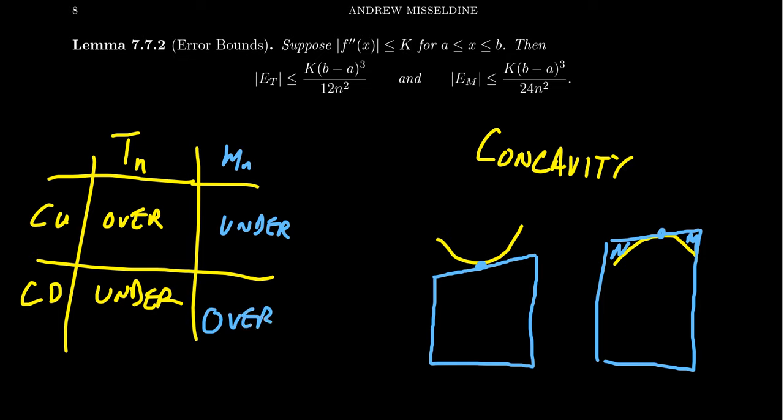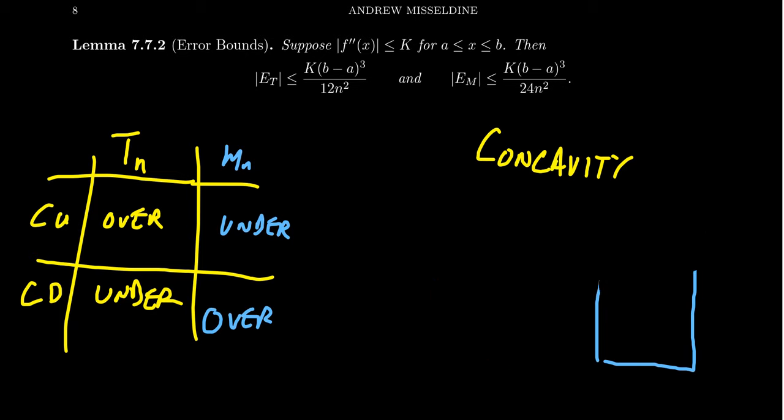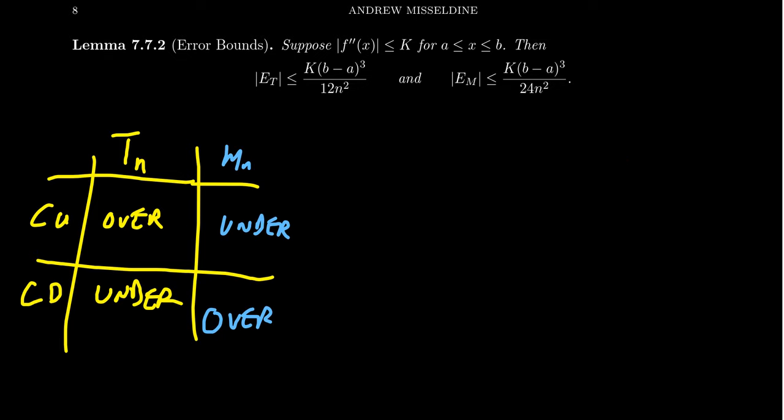Much like the left and right rule, we can make some predictions about whether we over- or underestimate. The concavity tells us something about how effective the trapezoid and midpoint rules are, and we measure concavity using the second derivative. With that in mind, let me present some error bounds for the midpoint and trapezoid rules.